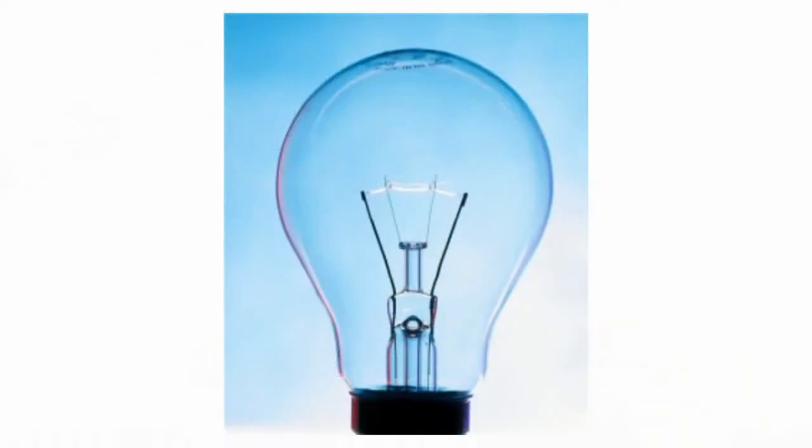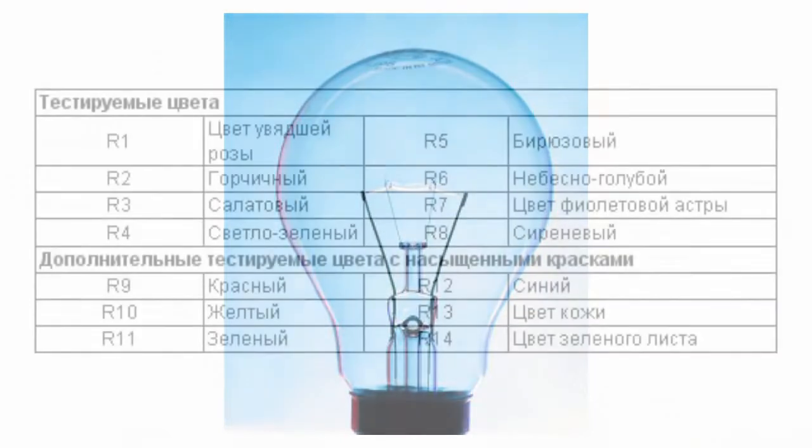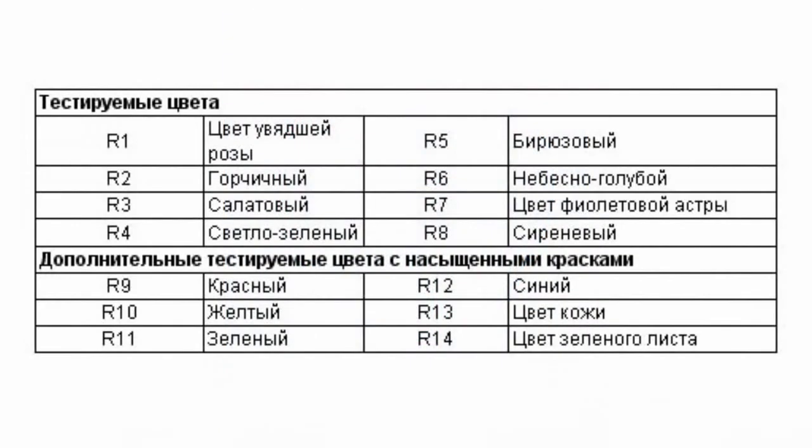Incandescent lamps are close to such results. The index is usually denoted as Ra. Eight test colors, lit with a test lamp and then with a standard lamp of the same color temperature, are used for defining this index. The less the difference between test colors and their rendering, the better the color rendering of the tested lamp — characterized as low, sufficient, good, or very good color rendering. There exists a system that mathematically compares changes in color spectrum for the same color as lit with a standard light source, and average differences are deducted from 100 to get the color rendering index.